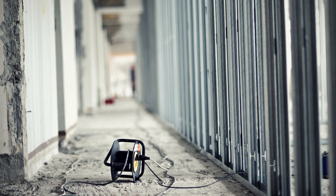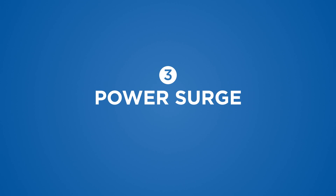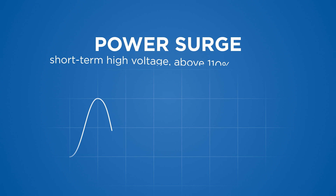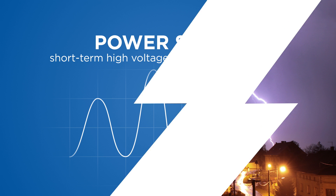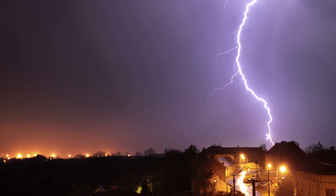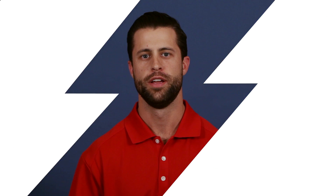In addition to crashes, sags can damage hardware. Power surge or power spike is short-term high voltage above 110% of nominal. This can be caused by a lightning strike and can send line voltages to levels in excess of 6,000 volts. A spike almost always results in data loss or hardware damage.